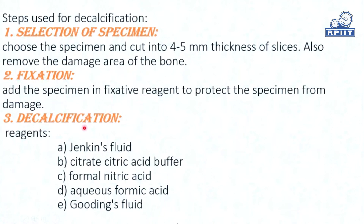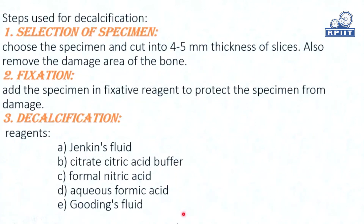Third step is decalcification. For decalcification, the reagents used are: Jenkins fluid, citrate, citric acid buffer, formal nitric acid, aqueous formic acid, and Gooding's fluid. These five types of fluids or reagents are used in decalcification.